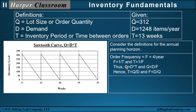Therefore, in the fundamental equation, we can substitute one over F in for T, and we have an equivalent form of the fundamental equation. We can solve for T and solve for F. This box represents properties and relationships that are commonly used in inventory analysis.